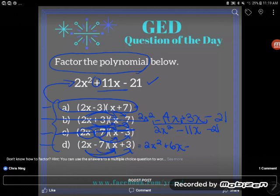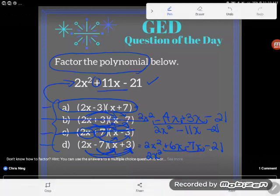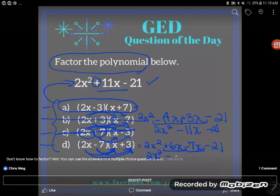Negative 7 times x is negative 7x. And negative 7 times positive 3 is negative 21. So 2x squared. I'm going to combine my middle terms. Positive 6x and a negative 7x give me a negative 1x.